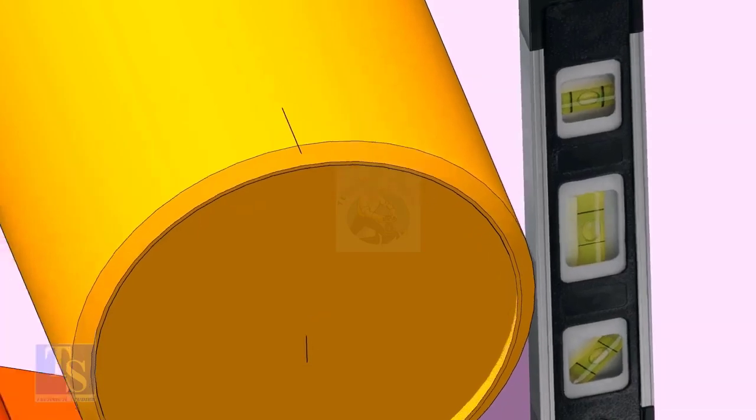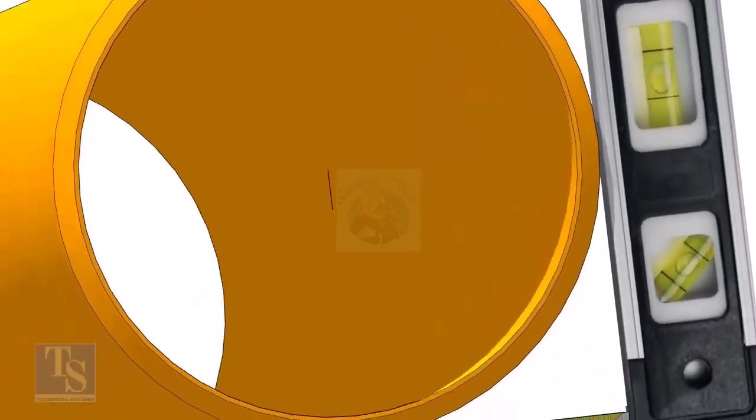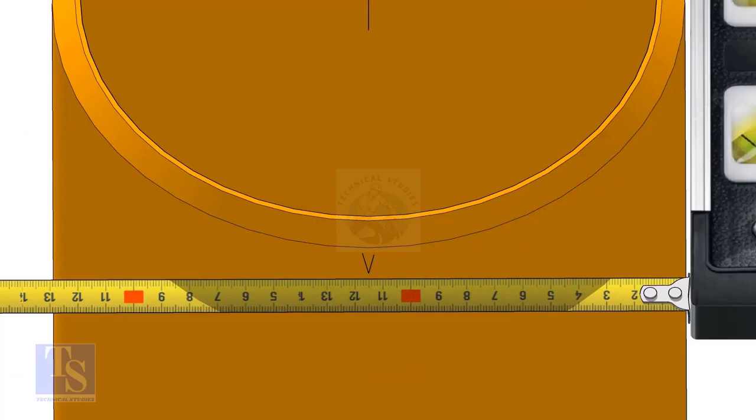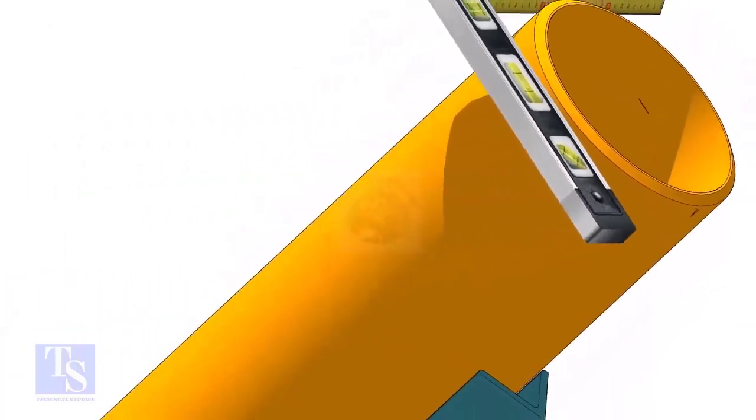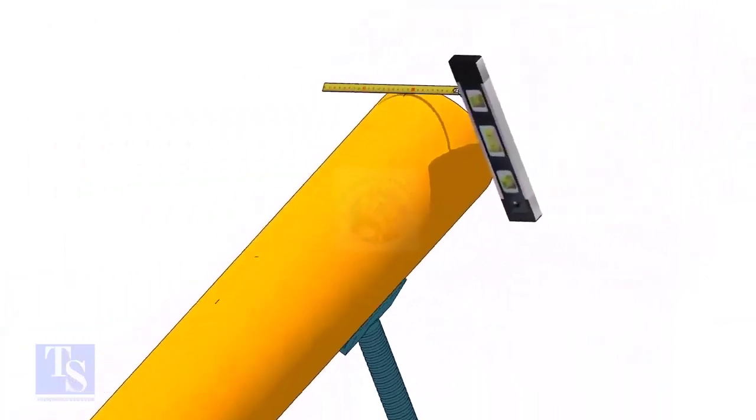Hold a level bottle firmly and vertical at the side of the pipe as shown. Mark half OD at the top and the bottom side of the pipe. Cross check the dimension from the opposite side to ensure the marking is correct.